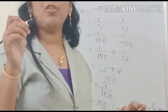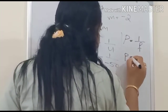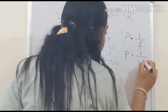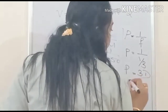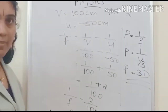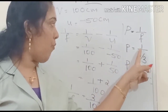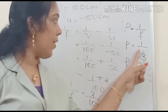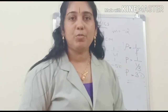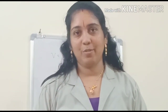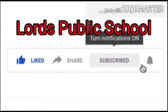The equation for power is P equals 1 by F. Substituting F equals 1 by 3 meter: P equals 1 divided by 1 by 3, which equals 3. So P equals 3 diopters. Dear students, let's wind up today's class. See you in the next class. Thank you.